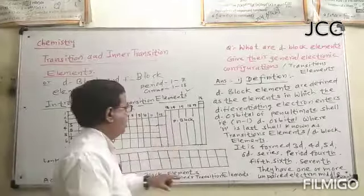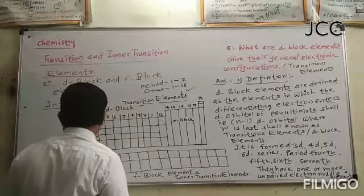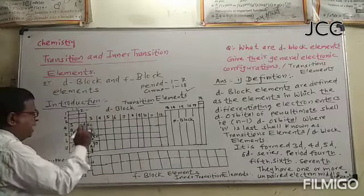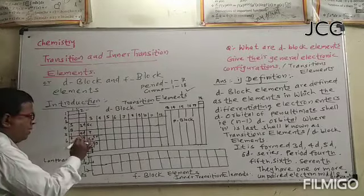There are d-series: 3d series, 4d, 5d, 6d. Here is valence, 3d block, right?